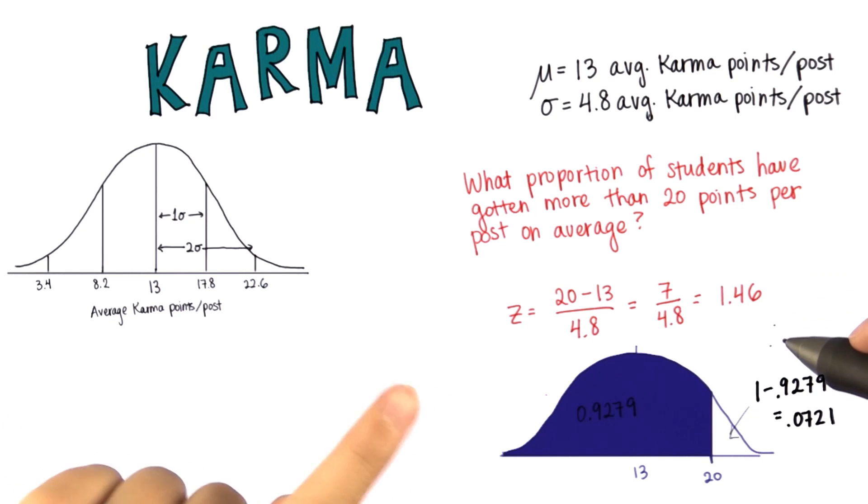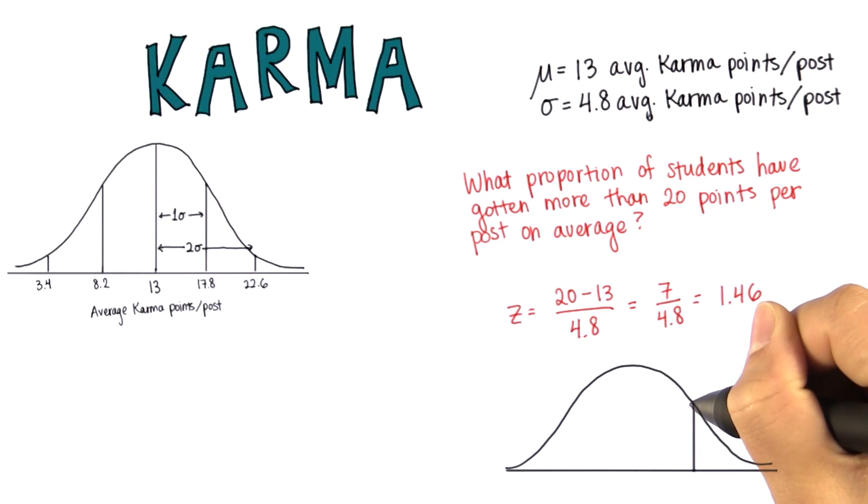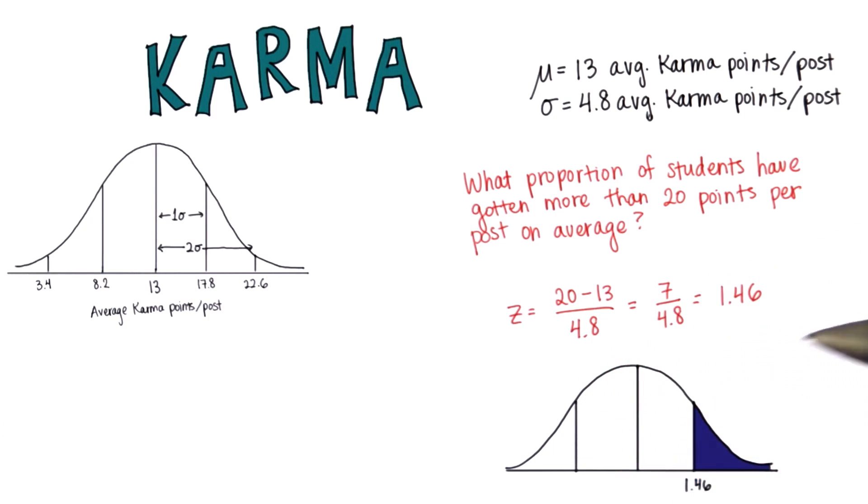Before we move on, I'm going to show you one more way to look at this. Since the data is symmetrical, that means the amount greater than 1.46 is equal to the amount less than negative 1.46.